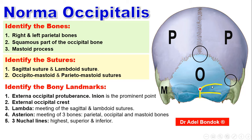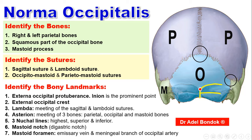There are three nuchal lines: the highest nuchal line, the superior nuchal line, and the inferior nuchal line. The mastoid notch or digastric notch gives attachment to the posterior belly of the digastric muscle. The mastoid foramen transmits two structures: the artery, which is the meningeal branch of the occipital artery, and the vein, which is an emissary vein between the sigmoid sinus and the occipital veins.